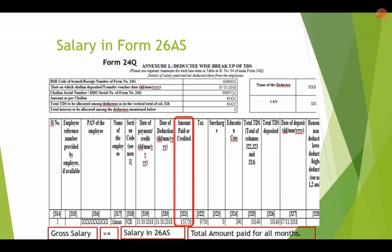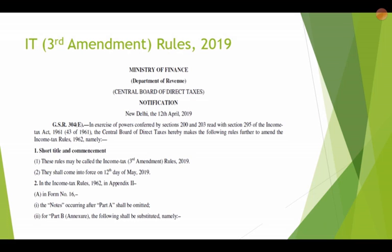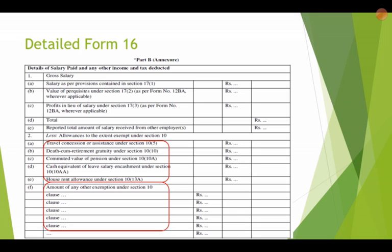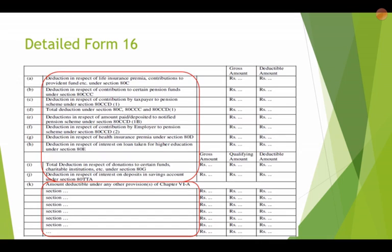Recently the third amendment rules of Income Tax Rules have made Form 16 very detailed. As you can see, various allowances like travel allowance, gratuity, commuted value of pension, leave encashment, house rent allowance and others are now to be specified. Everything is very detailed. Similarly, deductions from Chapter 6A are also very detailed now — for each section separately you have to provide this information, and if there are others they must be shown under the relevant section.